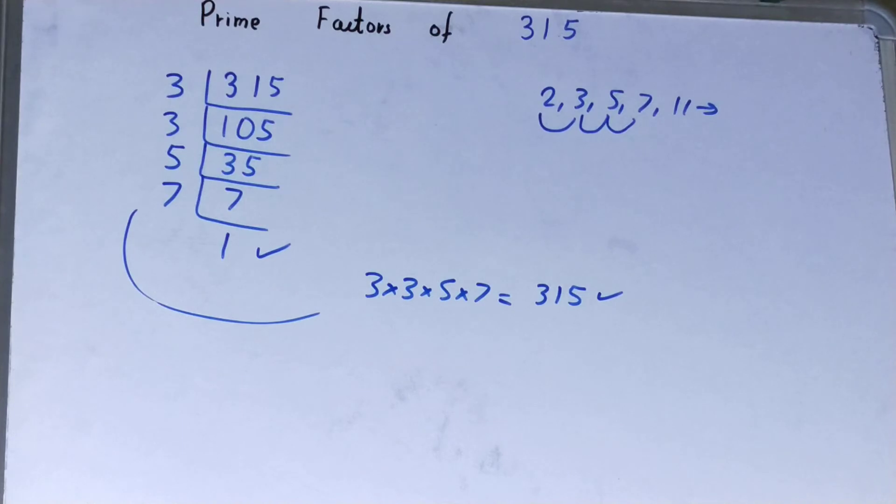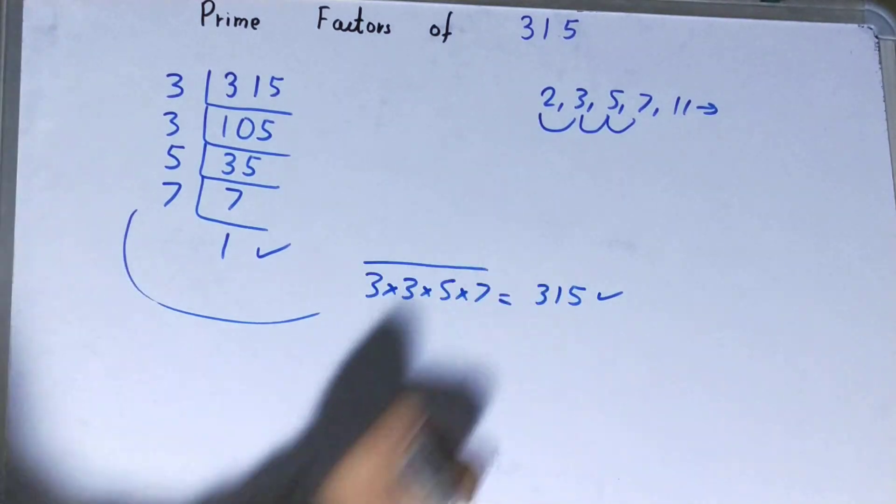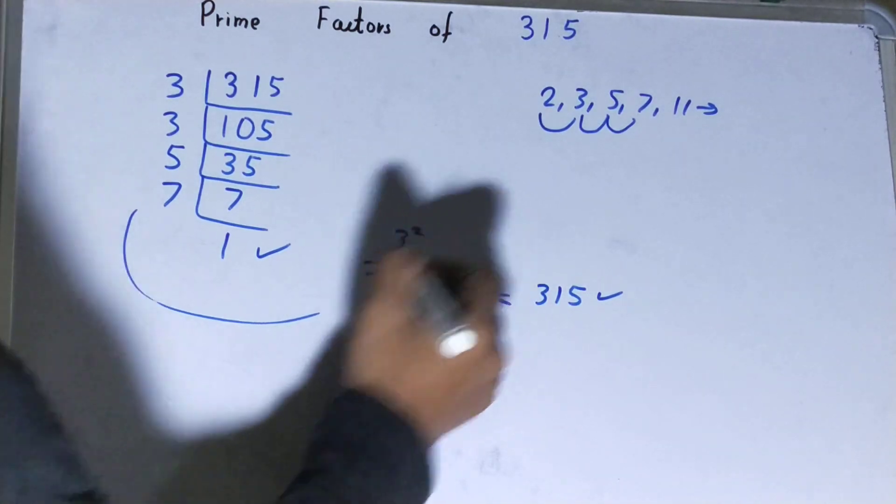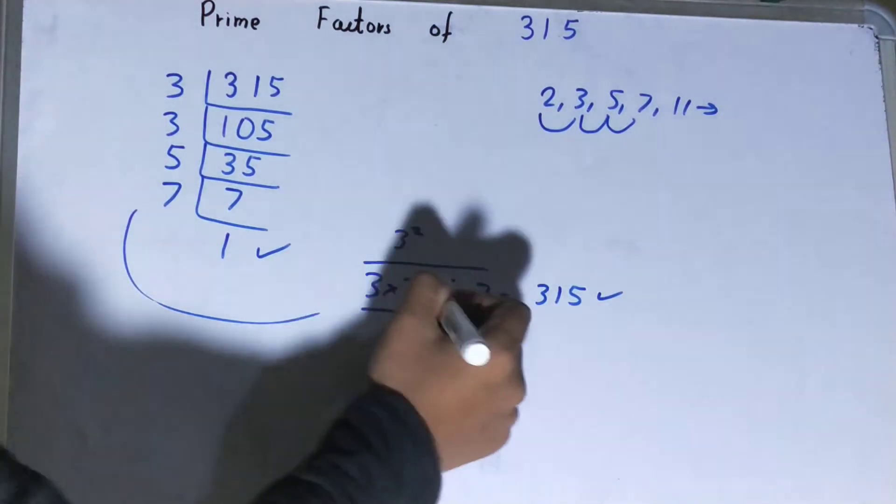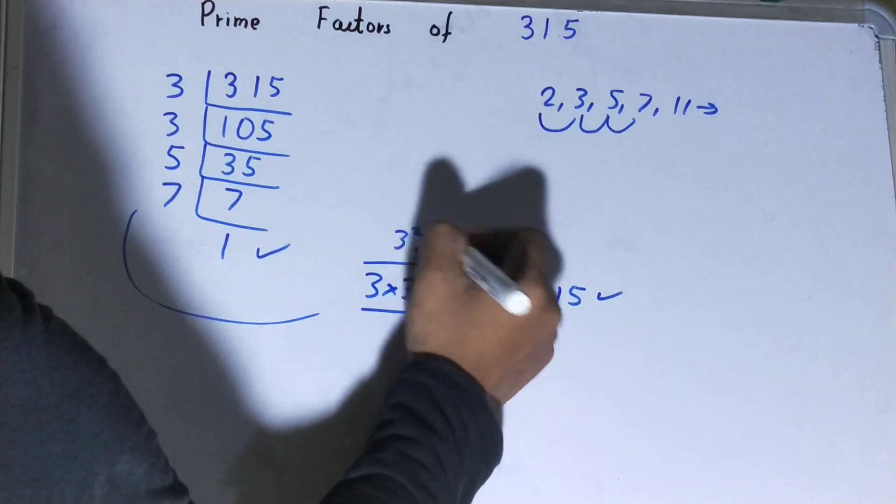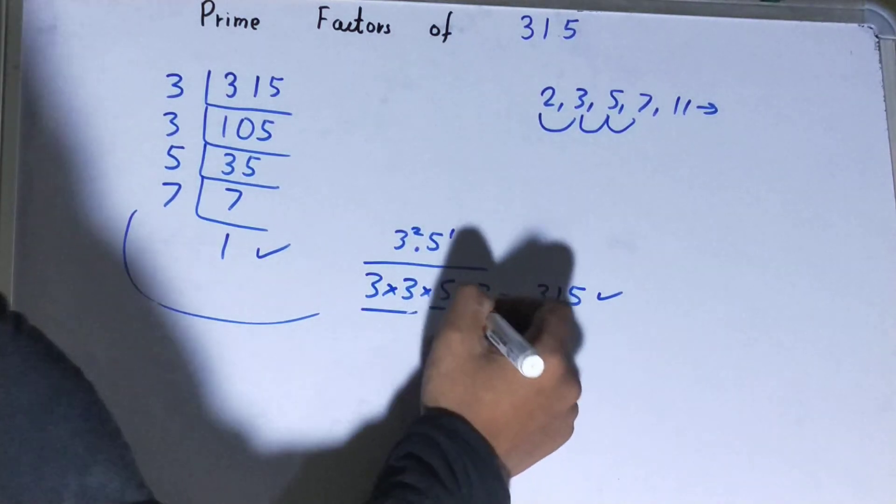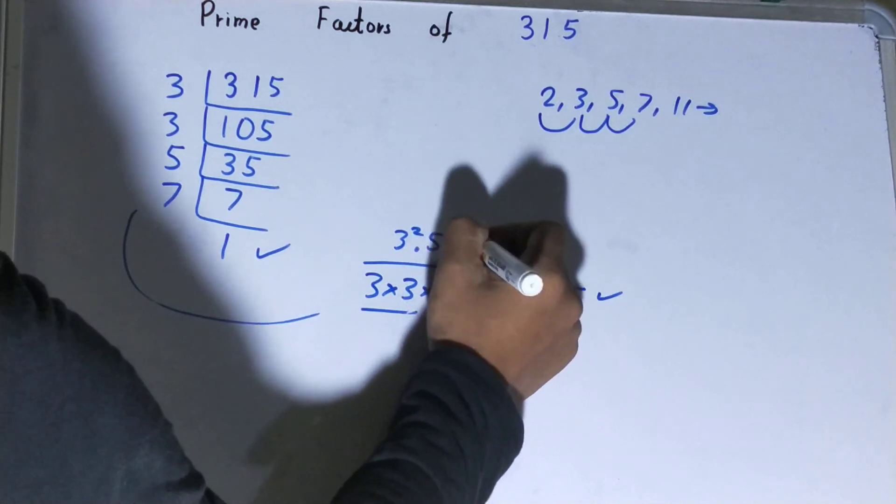You can also write it in a different way. You have two 3s, so you can write it as 3 squared. You have one 5, so you can write it as 5 raised to power 1. You have one 7, so you can write it as 7 raised to power 1. So you can write it either way, it's up to you.